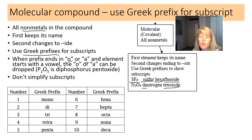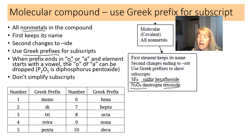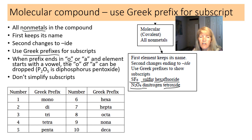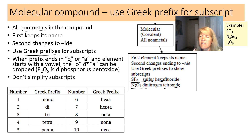In molecular compounds, we do not reduce subscripts. Unlike ionic compounds where we'd use the simplest ratio, molecules may not be in simplest ratio — N2O4 is a good example. Leave the subscripts as they are; simplification is only for ionic compounds. SO2: sulfur keeps its name, oxygen changes to -ide, and with a two, it's sulfur dioxide.